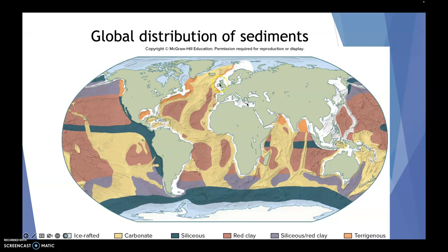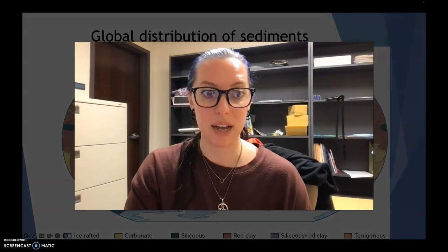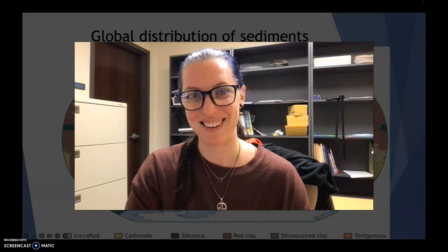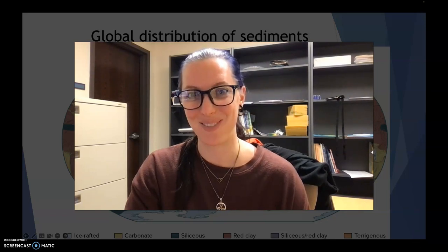If we look at the global distribution of all these sediments, this is a wonderful map in your book. I encourage you to take a look at it and consider the various distributions of sediments around the bottoms of the oceans. When we come back in our last little video, we'll finish up talking about different sediment types. Thank you for listening and watching.